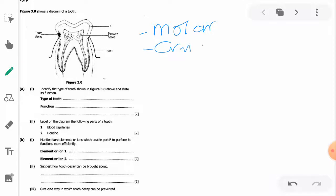Part B says label on the diagram the following parts of the tooth: the blood capillaries. So the blood capillaries are these, pardon me, those inside just there. That's where you label.